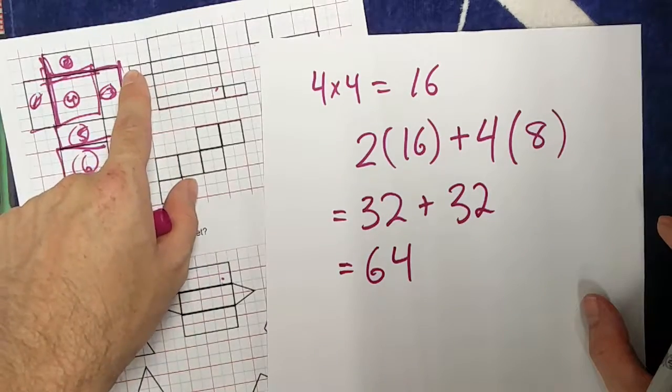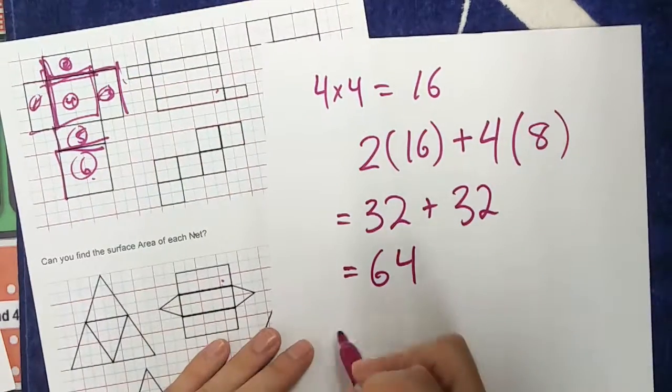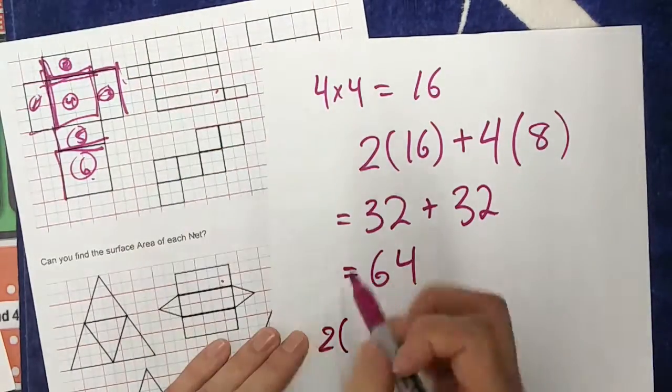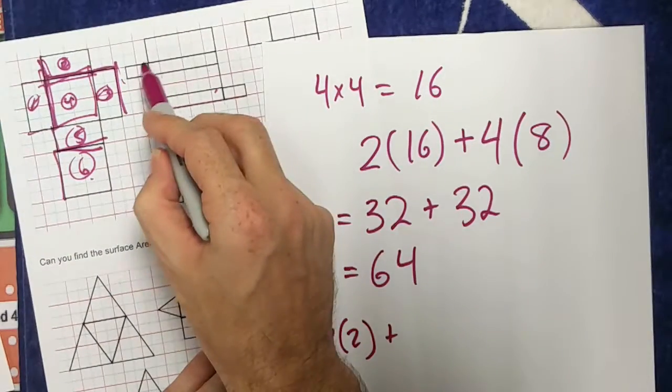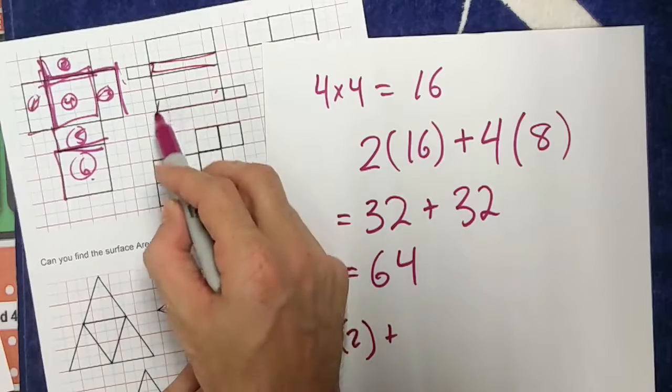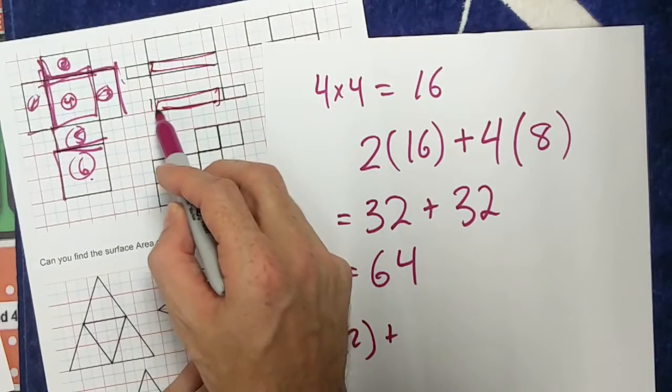I have here, how many of these do I have? I have 2 of them. So I have 2 of my 1 by 2. So that's 2 groups of 2. I have these 2, which are the same, right? And that's a 1 by, is it 6?